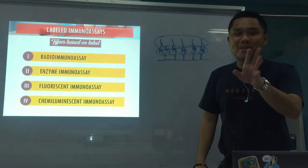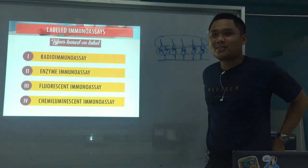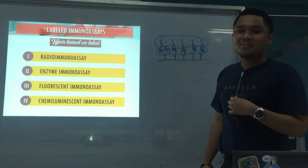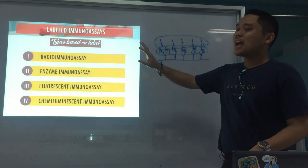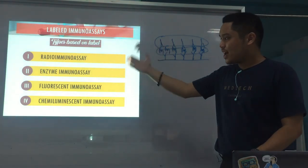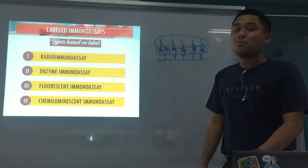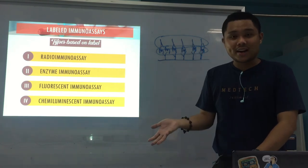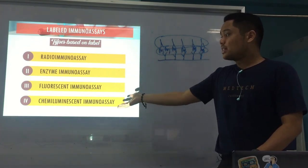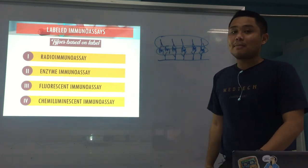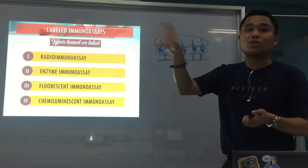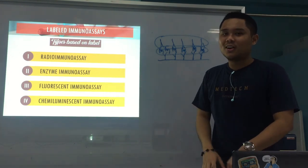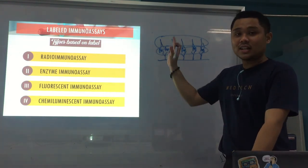Now we go to the types based on label. We have radioimmunoassay, enzyme immunoassay, fluorescent immunoassay, and chemiluminescent immunoassay. They just differ on the types of labels used. For radioimmunoassay, radioisotopes are used. For enzyme immunoassay, enzymes are used. For fluorescent immunoassay, fluorochromes or fluorophores are used. And for chemiluminescent, a chemical reaction that emits light is used. We'll go through each individually.